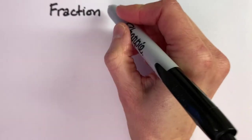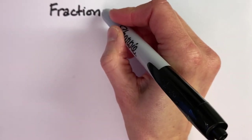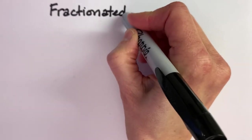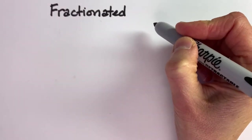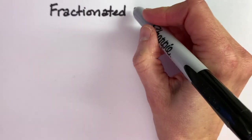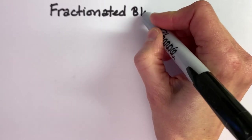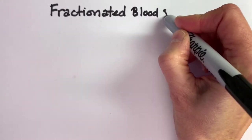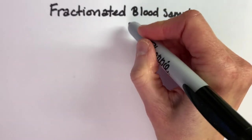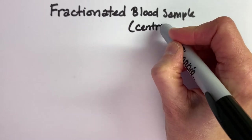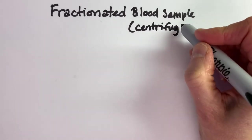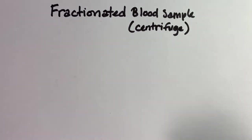You already know the word fraction. It means to divide something into parts of 100, so fractionated. If we said we were going to divide that 100% or that whole blood, now we're going to put it into fractions. This is called a fractionated blood sample, or one that has been run through a centrifuge.